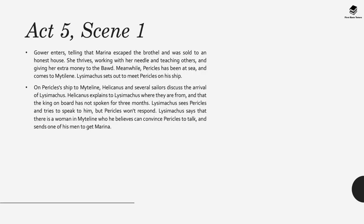In Act 5, Scene 1, Gower tells that Marina escaped the brothel and was assigned to an honest house, thriving by working with her needle and teaching others. Meanwhile, Pericles has been at sea and comes to Mytilene. Lysimachus sets out to meet Pericles on his ship. Helicanus explains to Lysimachus where they are from and that the king has not spoken for three months. Lysimachus sees Pericles and tries to speak to him, but Pericles will not respond. He says there is a woman in Mytilene who he believes can convince Pericles to talk, and sends one of his men to get Marina.